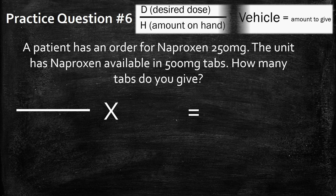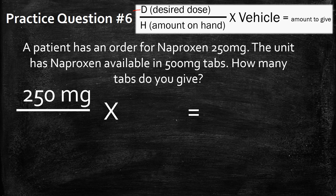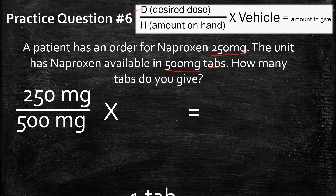Let's pull up our formula and start solving. This one's kind of back to basics. The desired dose is 250 milligrams, since that's what the patient has an order for. The amount on hand is 500 milligrams per tab, so you get 500 milligrams in one tab.